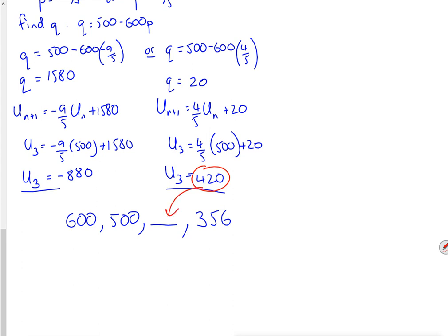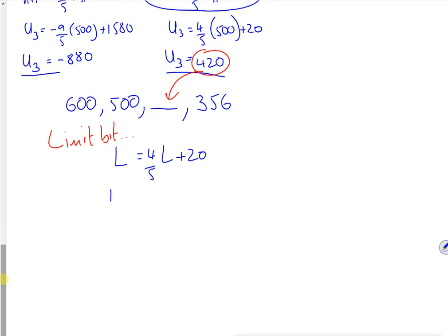Right then. So that must mean that I'm using this formula. So for the limit bit, I'm using the formula. L is 4 fifths L plus 20. So if I take the 4 fifths L away, I've got 1 fifth of L plus 20. So L is 100. There.